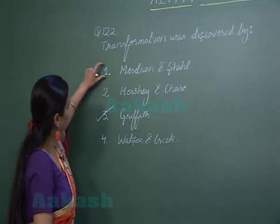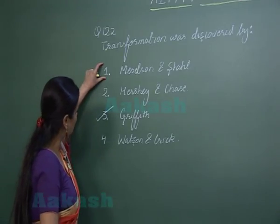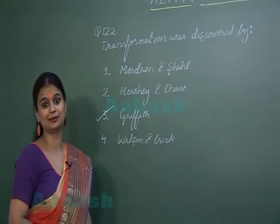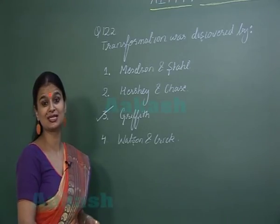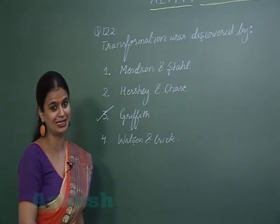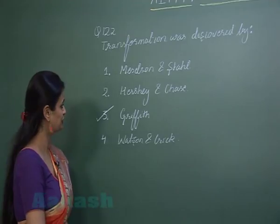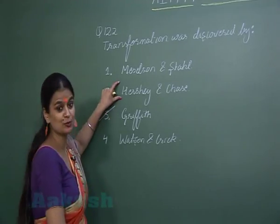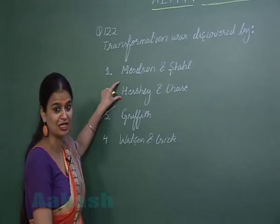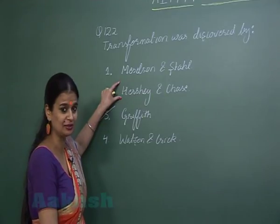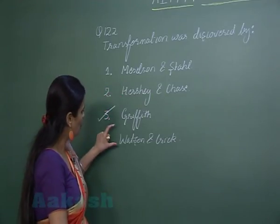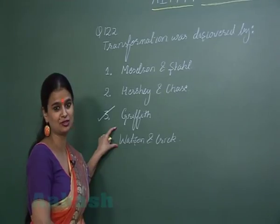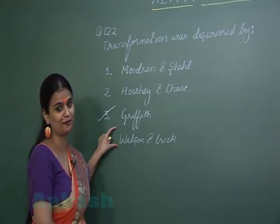Meselson and Stahl proved the semi-conservative model of DNA replication. Hershey and Chase proved DNA as the genetic material in viruses. Watson and Crick gave the three-dimensional structure of DNA.